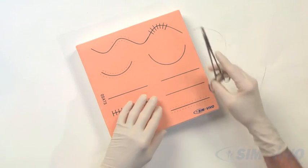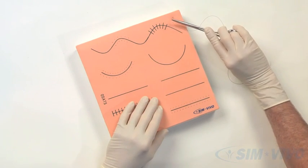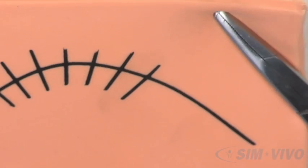Needles can be carefully disposed of by deeply embedding them in an unused space of the suture board and cutting off any residual suture material.